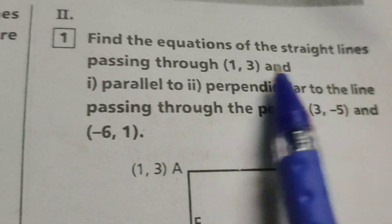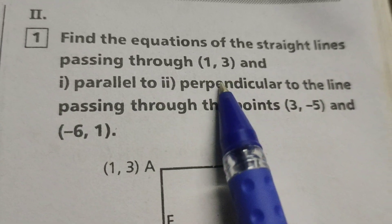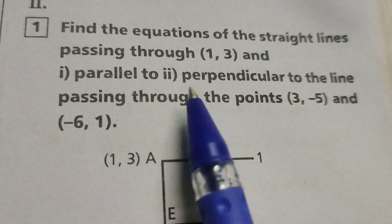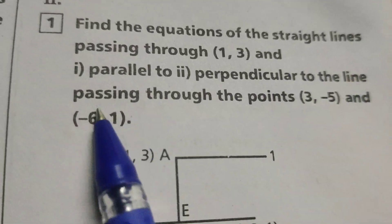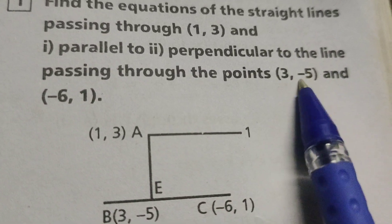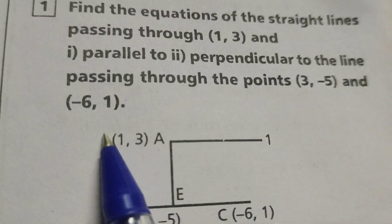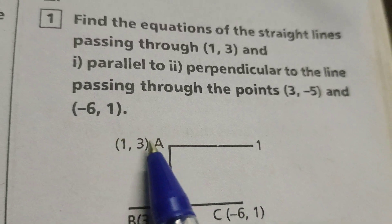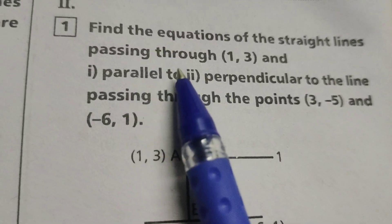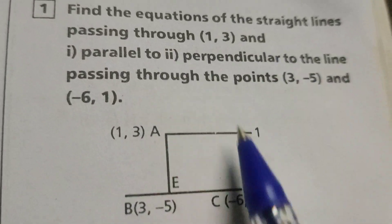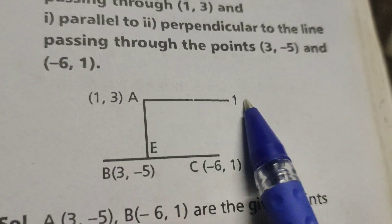Find the equation of the straight lines passing through (1, 3) and i) parallel to, ii) perpendicular to the line passing through the points (3, -5) and (-6, 1). Here the given equation of the line passing through (1, 3).